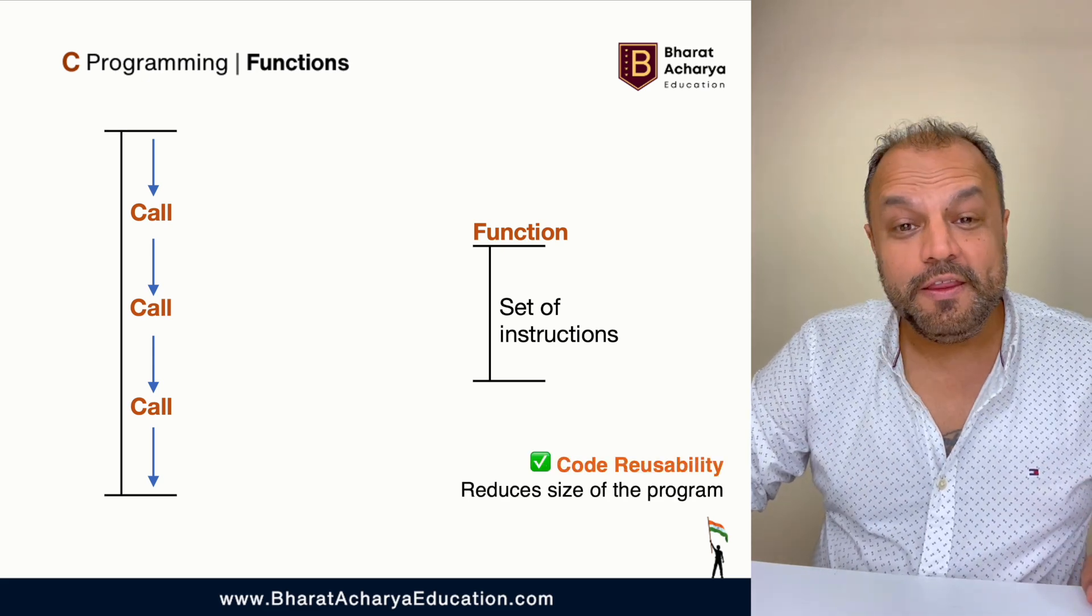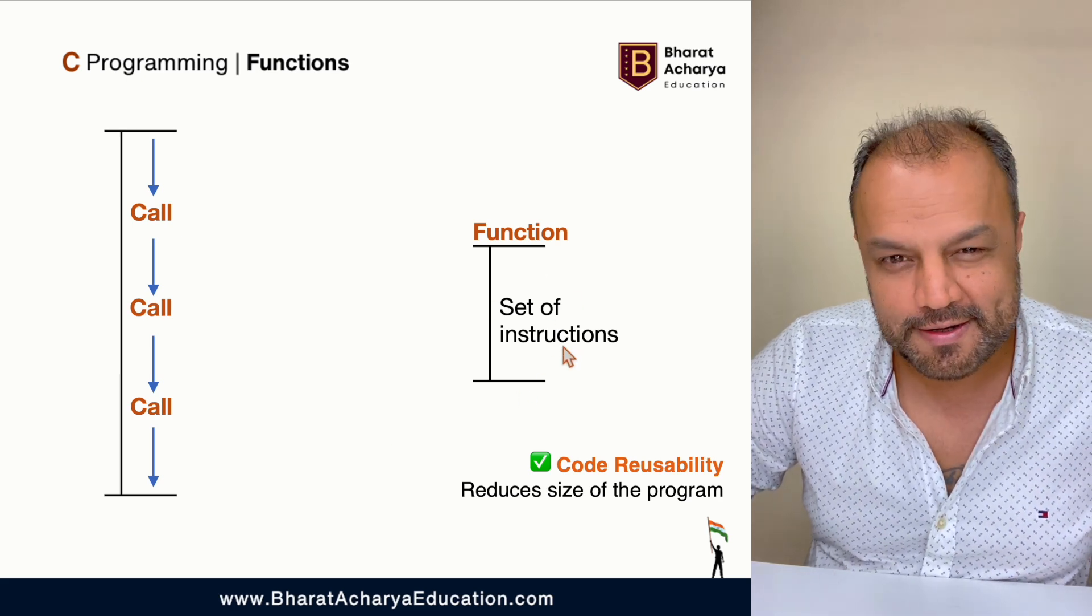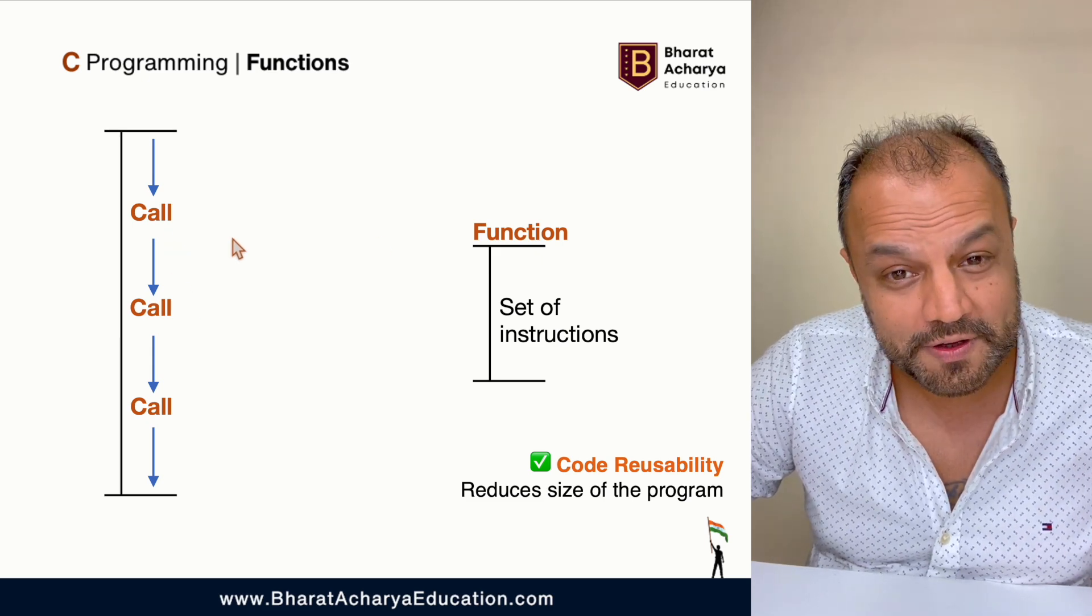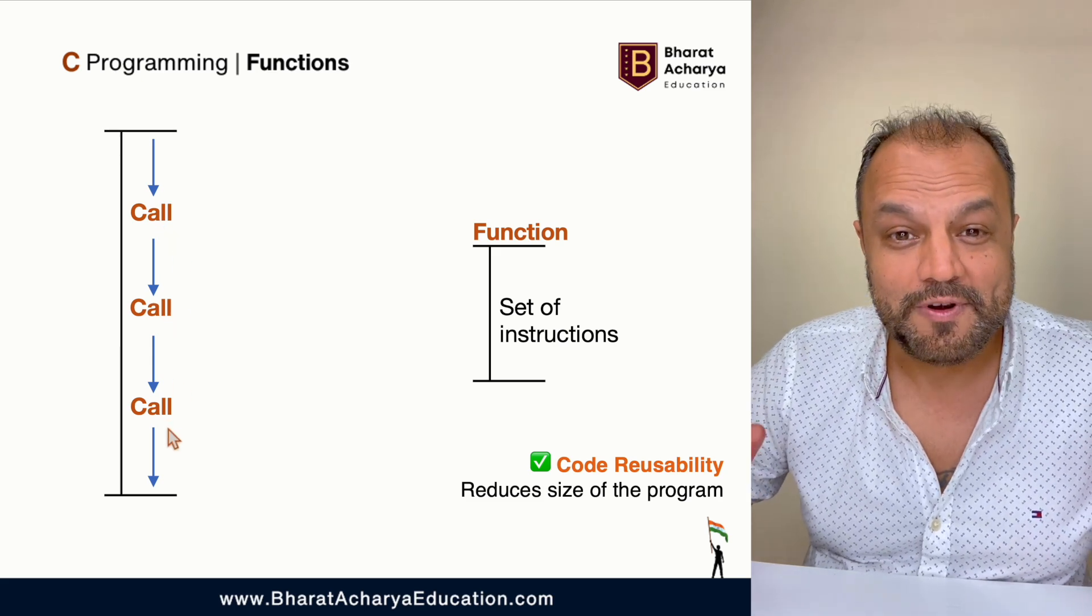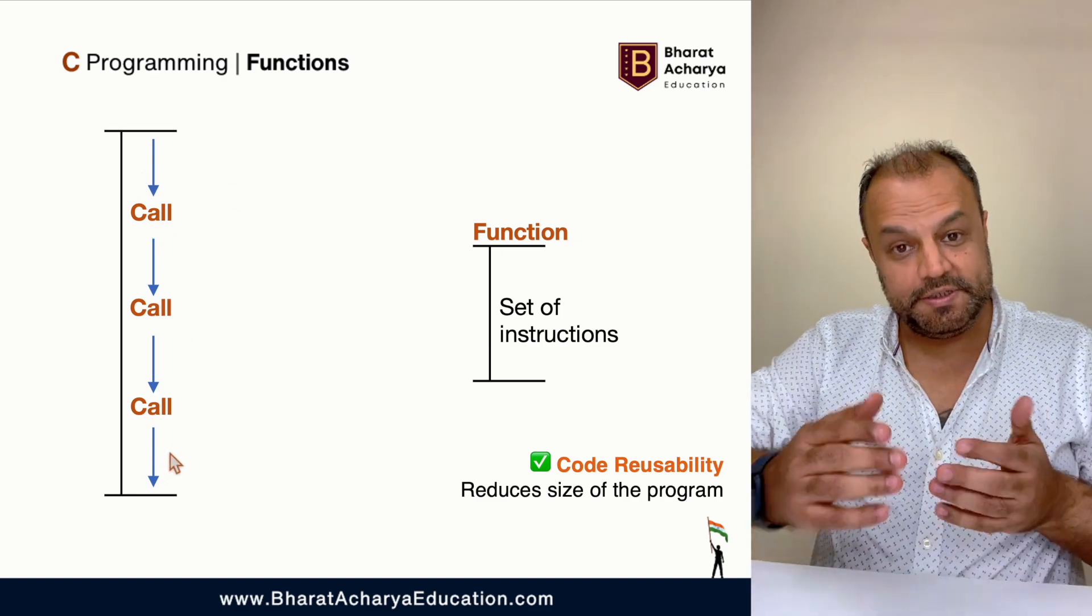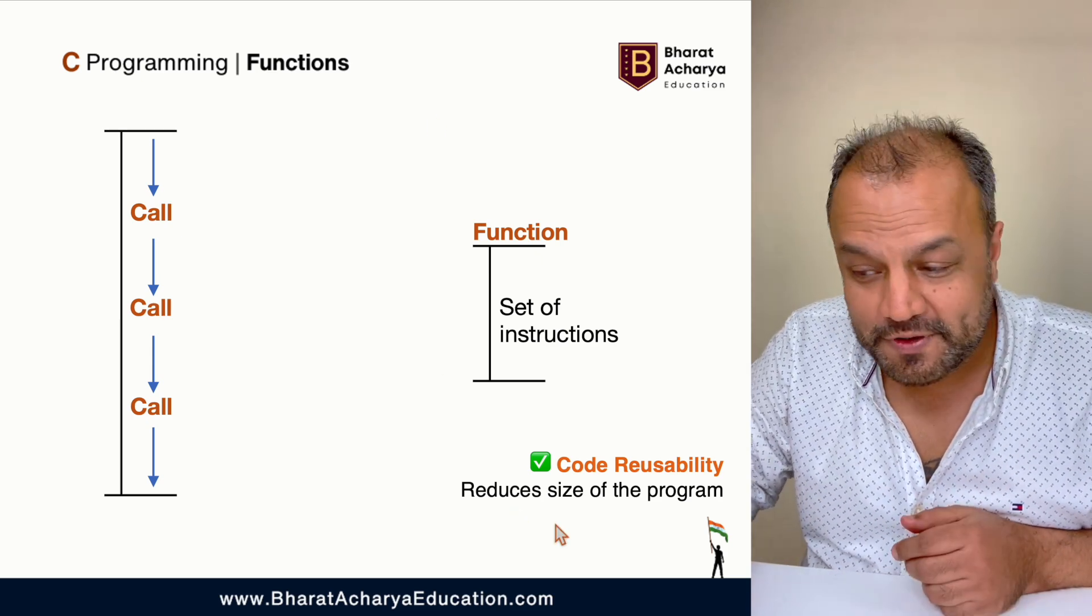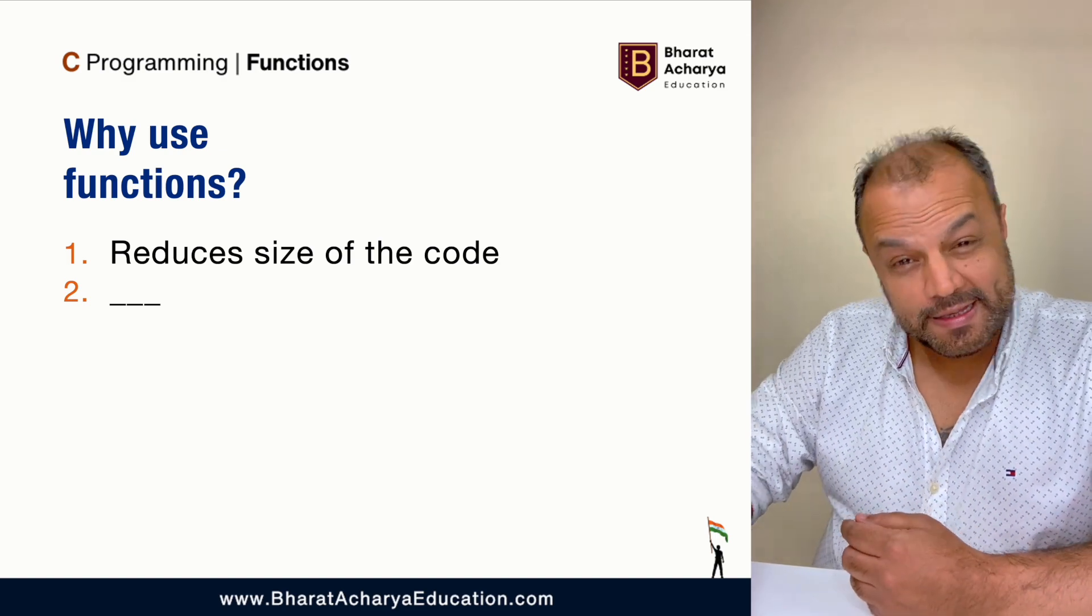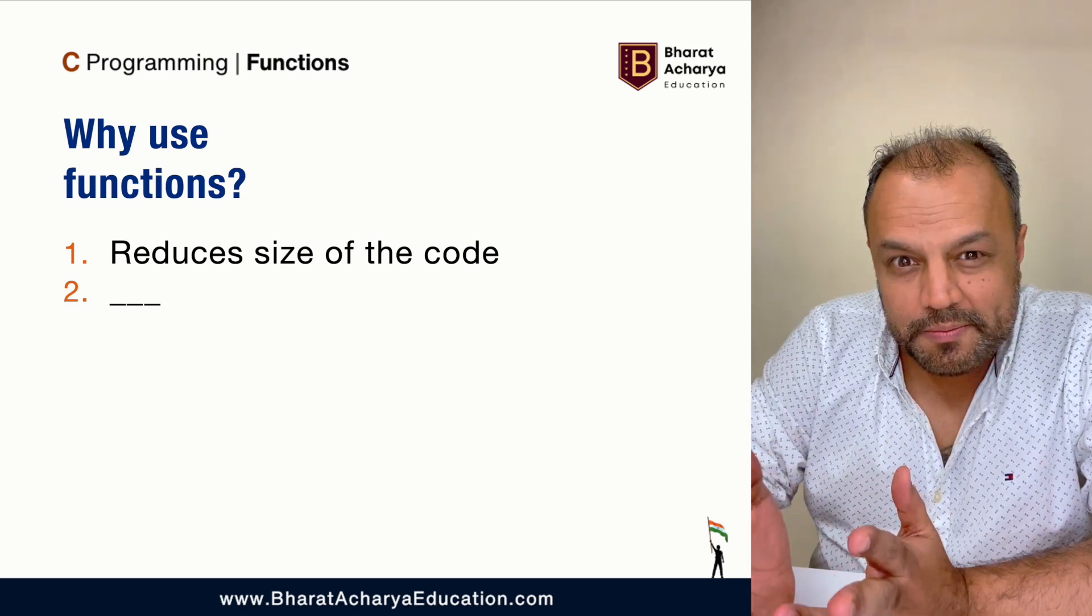Now, the obvious advantage that you see over here is these set of instructions are written only once and everywhere is just one line that is used to call the function. So suppose these were some hundred instructions and you had to write it at three places, there would have been 300 lines of program. Now it's just hundred lines plus these three lines to call the function. So you understand the program becomes smaller as called code reusability. That's the first advantage of using functions. It reduces the size of code. Now this is an advantage that everybody knows. Everybody, I mean by now, without me telling you, you would have figured that out. I have common sense.